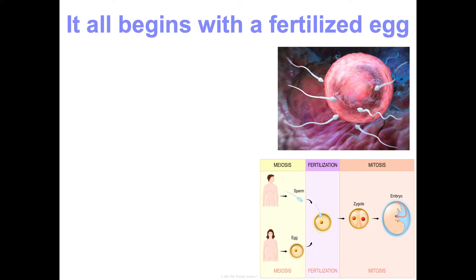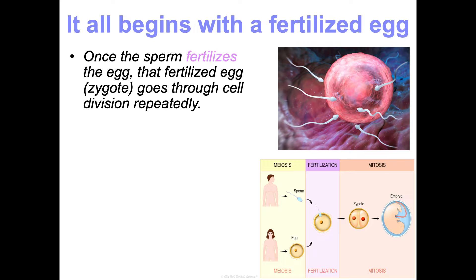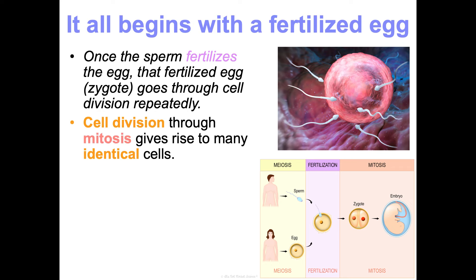It all begins with a fertilized egg. Once upon a time, a sperm from your biological father fertilized an egg from your biological mother, and you became a zygote — that is the first time that you had all of your genetic information. Half of your DNA was in your biological father's sperm, half in your biological mother's egg. When fertilization occurred, you became whole from a genetic standpoint, and that zygote started going through cell division repeatedly, giving rise to many identical cells. So you became this clump of identical cells.